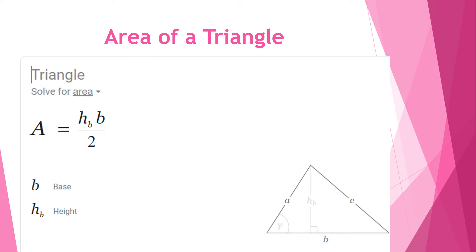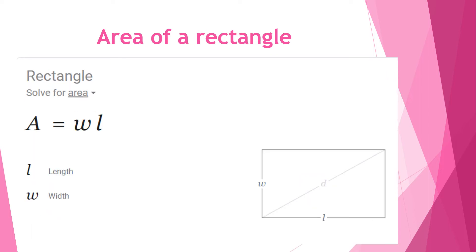Next, to find the area of a triangle we have to use the formula A equals (h_b times base) over 2, where b is the base and h_b is the height. As you can see in the illustration, it uses the highest point of the triangle as the height, and it's in the middle.